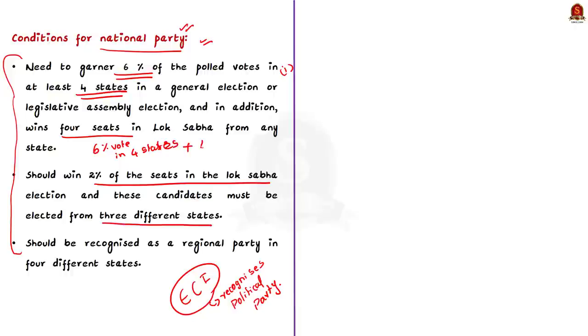The second condition is that the political party should win 2% of the seats in the Lok Sabha election and these candidates must be elected from 3 different states. The third condition is that the political party should be recognized as a regional party in 4 different states. These are the conditions which need to be satisfied by a political party to get national party status.